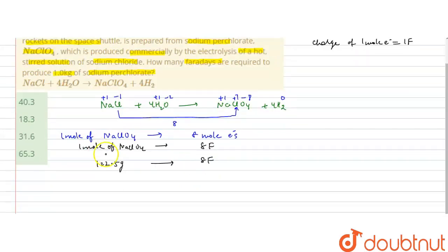So one gram will require eight divided by 122.5 Faradays. One gram of NaClO4 will require this much Faradays. But we are given to produce one kilogram of sodium perchlorate.